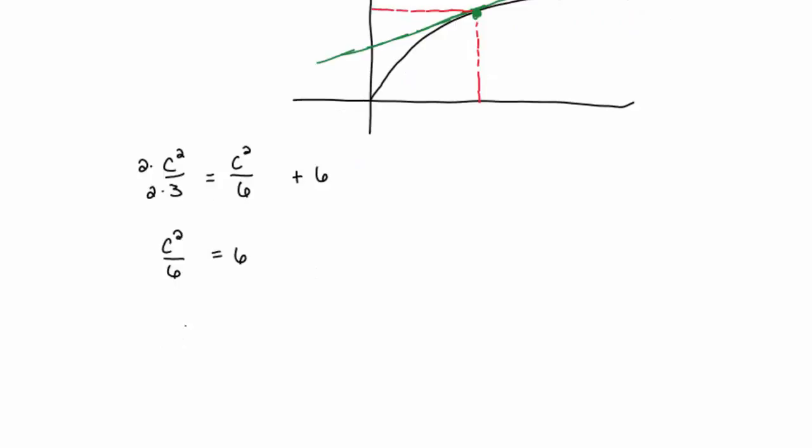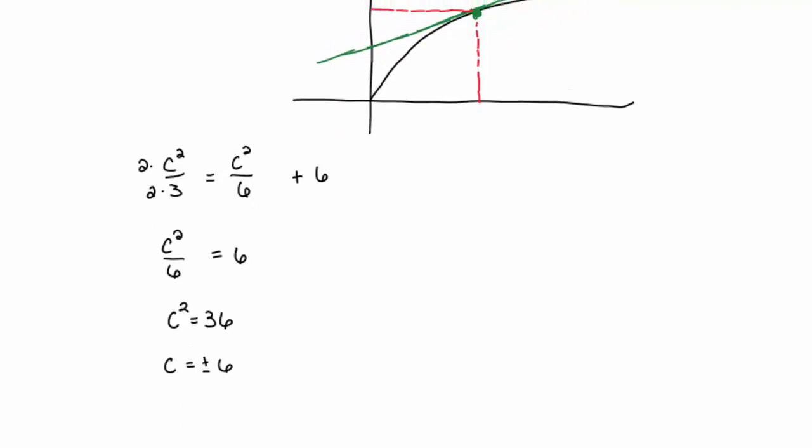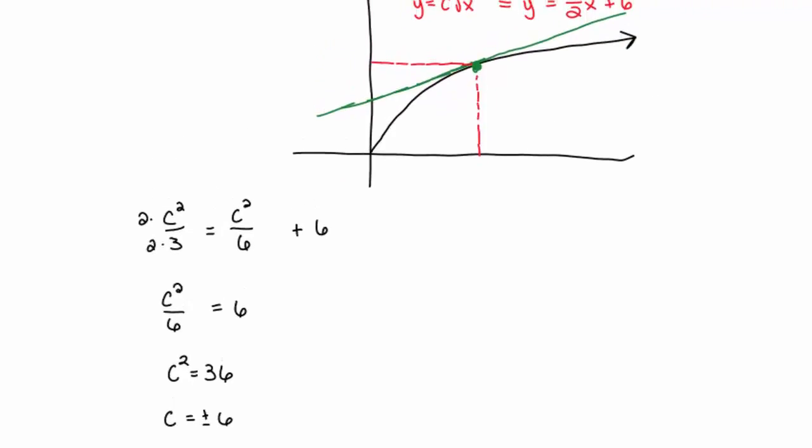Multiply both sides by 6, I get c squared is equal to 36. And therefore, c must equal plus or minus 6. Now, it's a pretty easy logical deduction that it's going to be c equals the positive 6, but you might not know why.